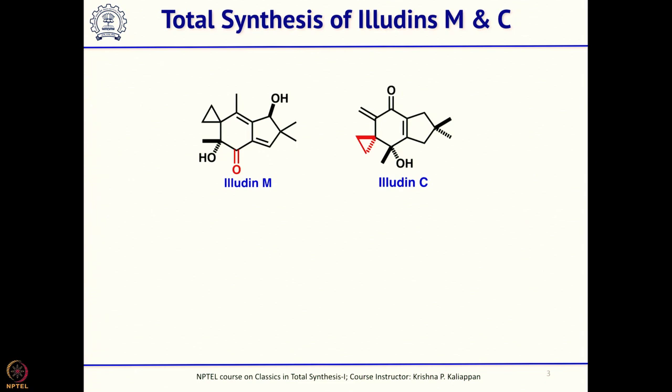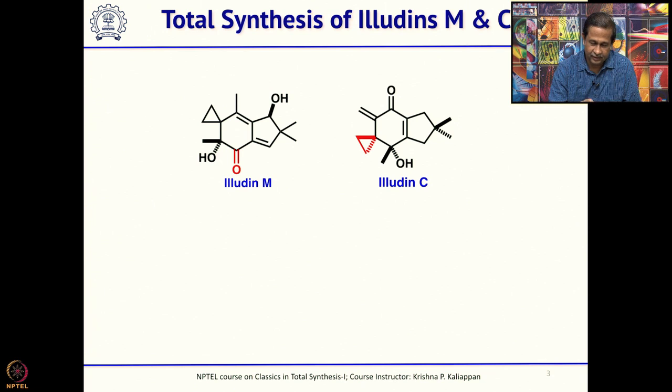When we talk about three-membered rings, not only do natural products have a three-membered ring as the core structure, but they also have other rings. We will talk about how these three-membered rings are made for these natural products, as well as other rings, and how the total synthesis is accomplished. Today's lecture covers two natural products called Illudin M and Illudin C. Both natural products contain a cyclopropane ring.